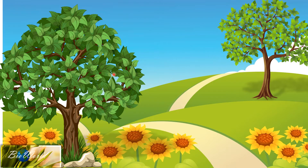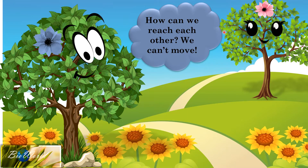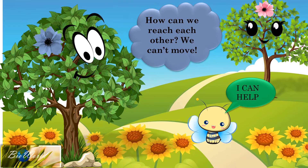Hello everybody! Today we're going to talk about reproduction in plants. Do you know plants have a problem? Once they start flowering and they need to exchange their gametes, they cannot do so because they can't move. So how do they solve this problem? Lucky for them, nature has helpful friends. Pollinating agents like the bee can help in the process of fertilization. So welcome to BioWorld.